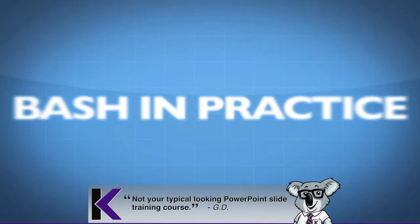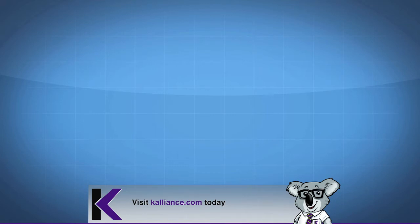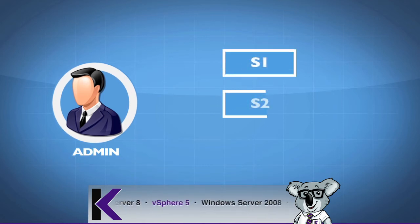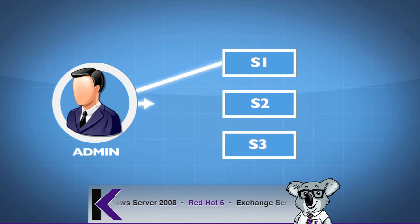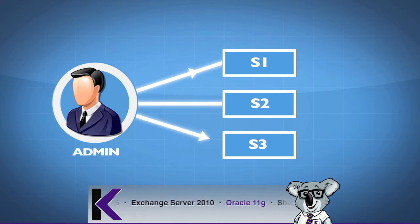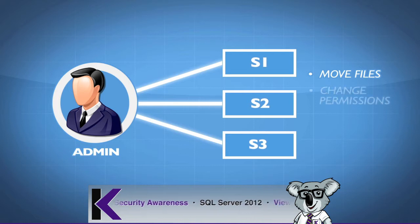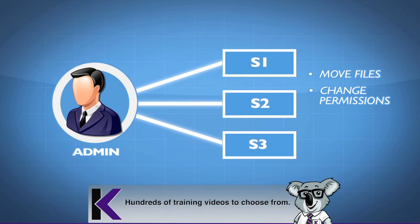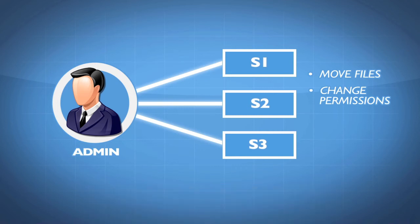Here's a lonely admin workstation. If you're going to be doing something that will be affecting multiple servers — server one, server two, server three — and on all of these servers you need to do something like move files around or change permissions, would you want to do it one at a time, one file at a time, one server at a time? Or would you rather do it all at the same time?